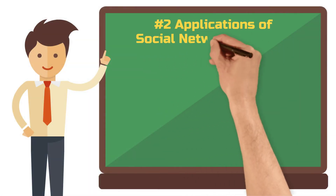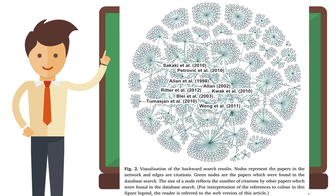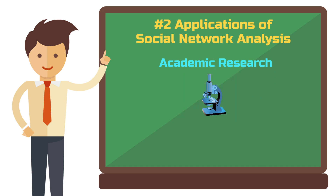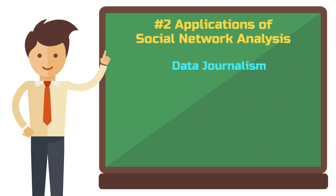Now let's look at the applications of social network analysis. The first application domain for this method is academic research. Theoretically, every discipline within the social sciences can use social network analysis, but it goes beyond that. For example, in any given discipline, you could analyze and visualize citation relationships between papers, universities or scientists. Most commonly, you'll find social network analyses in political science, communication studies or sociology. Data journalism also often uses the method of social network analysis.